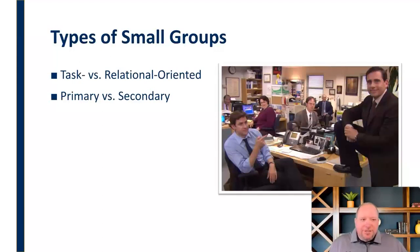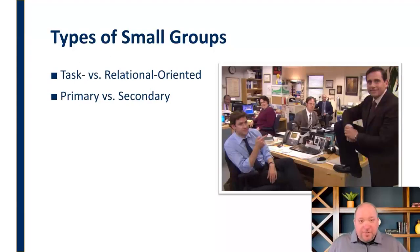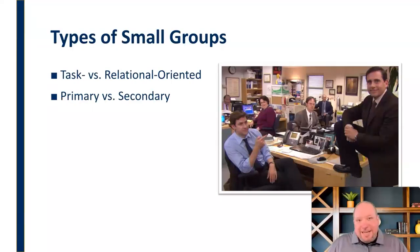But we also have secondary groups. These are groups that are less emotional and relational — fewer relational connections — and they're more task-oriented. Think about your co-workers and people like that. These are more secondary; they have maybe an expiration date, so to speak — relationships that exist only as long as you're with that organization. It's more task-oriented, and that's what we would call a secondary group.